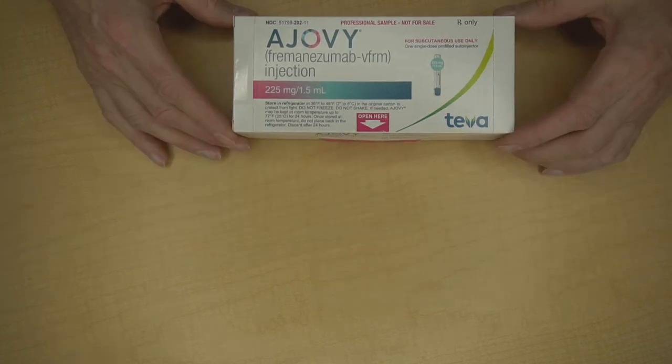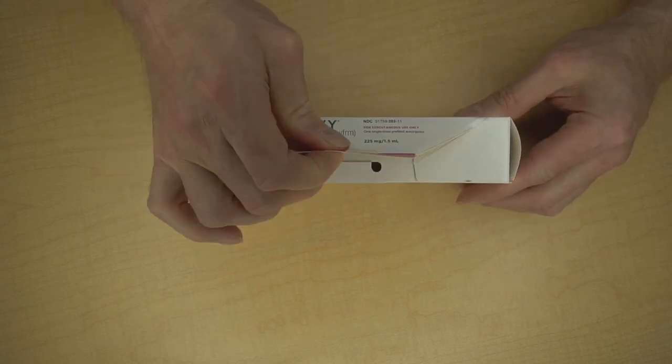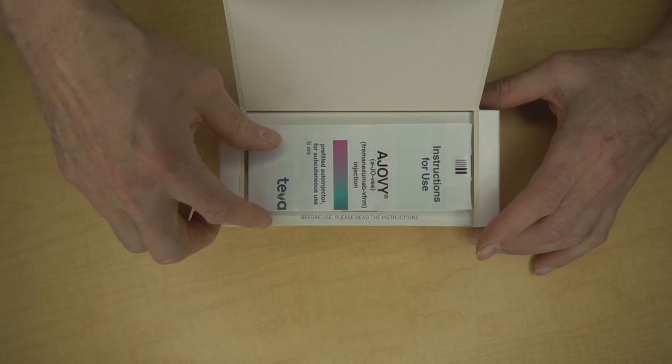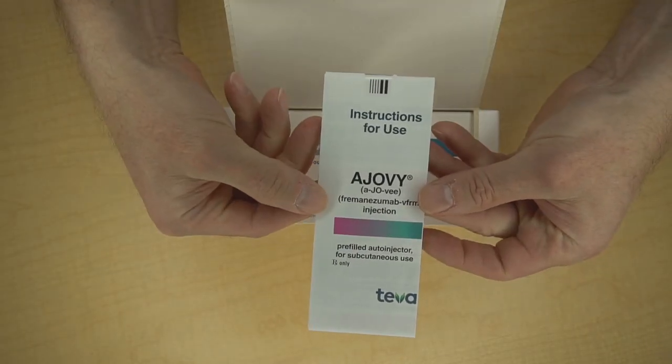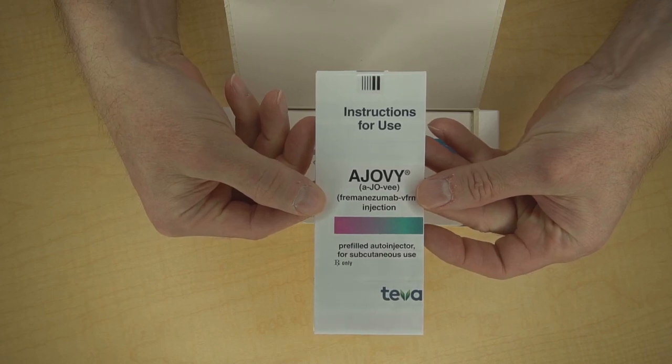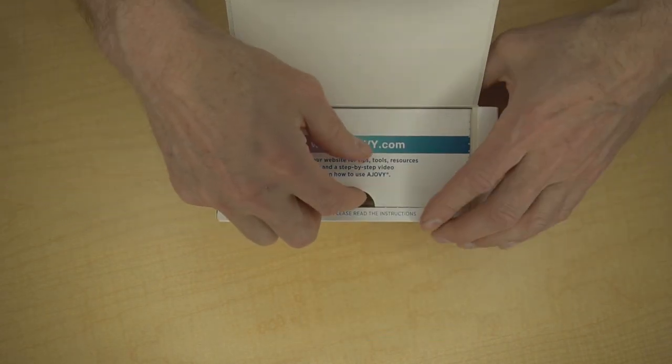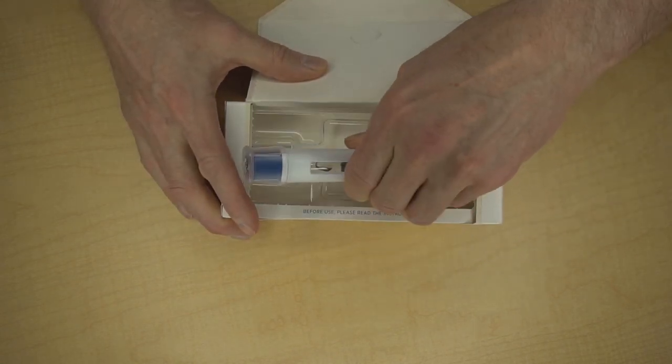To open the box, just follow the open here instructions. Lift here, tearing the box open just like that. The first thing you'll see is the instructions for use, which you should review before each injection. You can also review these instructions on the Ajovi.com website. In here, you'll find the Ajovi auto-injector. To remove it, just pull it straight out of the box.